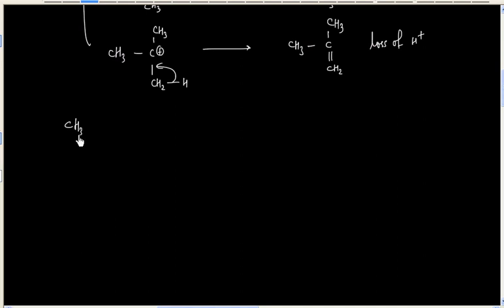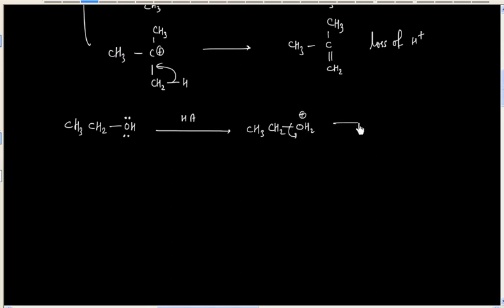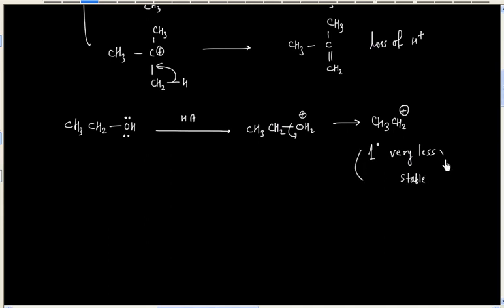Now for primary alcohol, if it were to follow the E1 mechanism, it would generate a 1° carbocation. However, a 1° carbocation is very less stable. So primary alcohol does not follow the E1 mechanism.